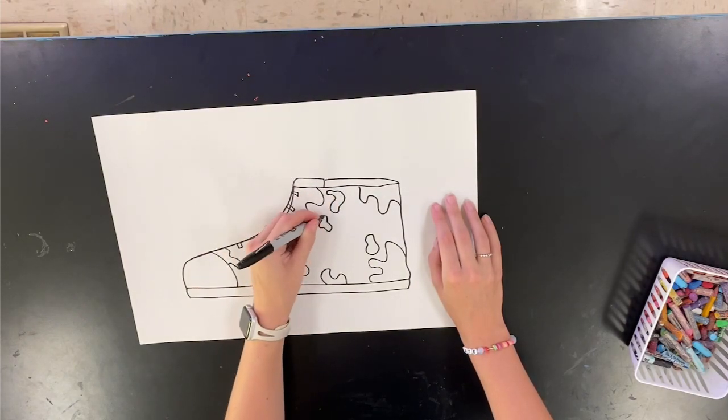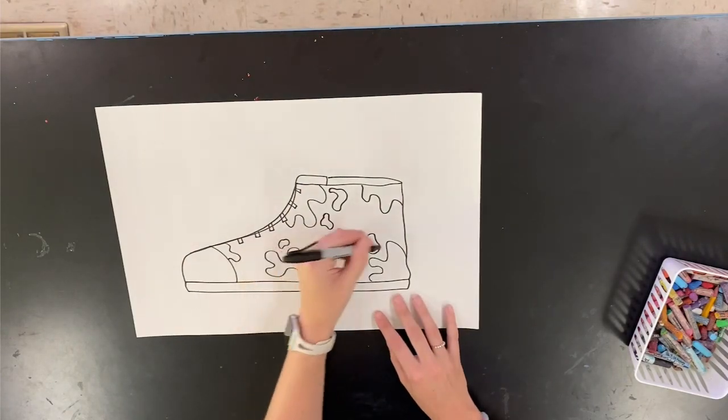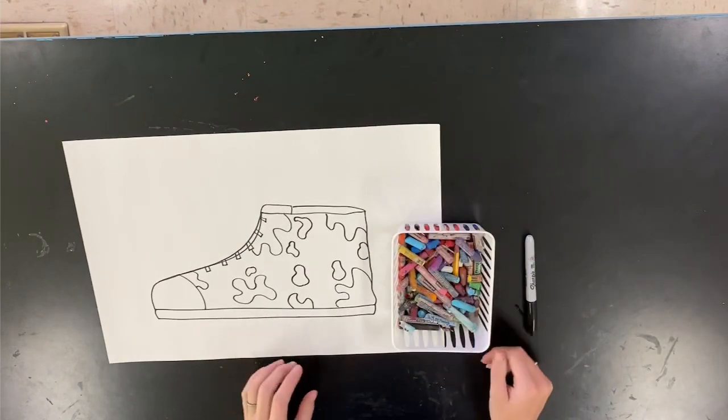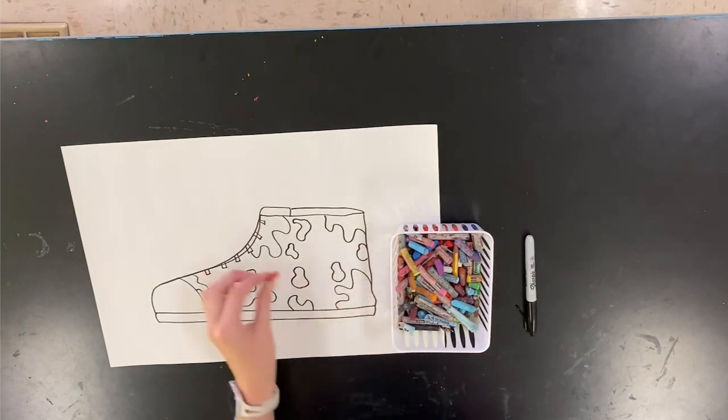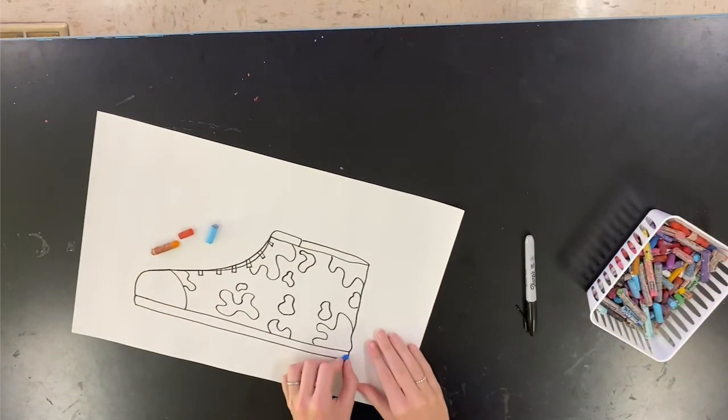I went with more of a splatter theme or a messy art theme. So I drew lots of blobs on my shoe and I kind of wanted it to be like our art classroom theme. And then now it's time to decide what complementary colors you are going to pick.